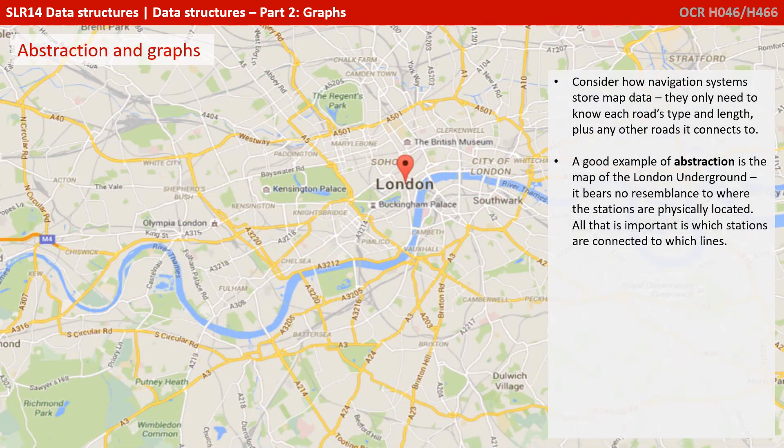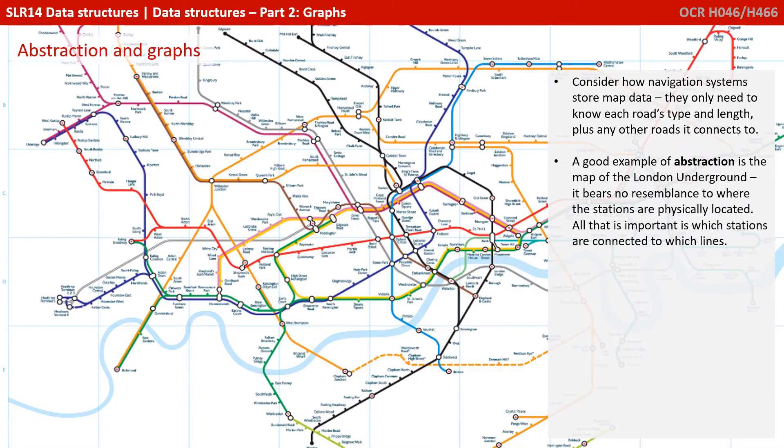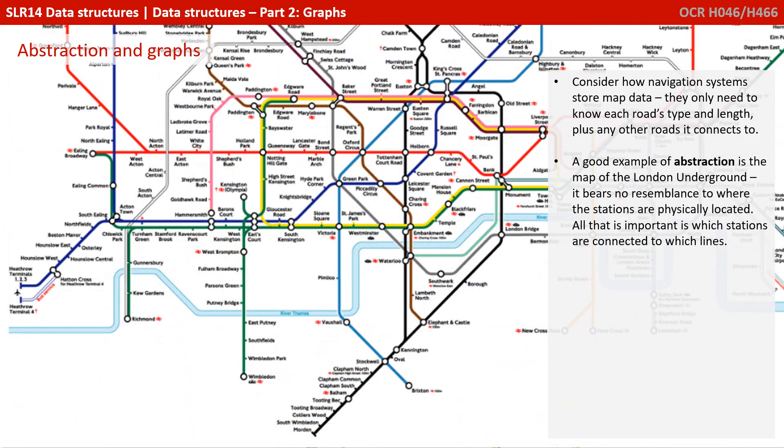Consider how navigation systems store map data. They only need to know each road type and length, plus any other roads it connects to. A good example of abstraction and graphs is the map of the London Underground. It bears no resemblance to where the stations are physically located. All that's important is which stations are connected to which lines.